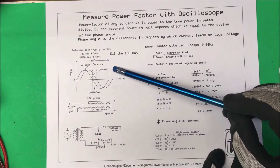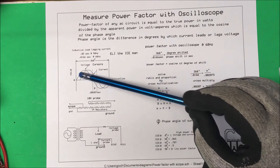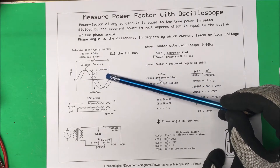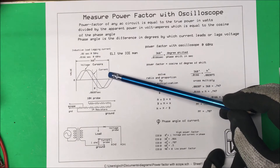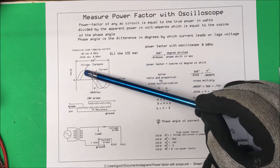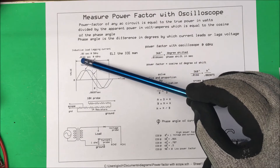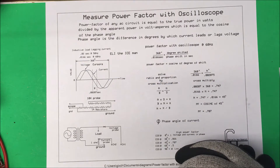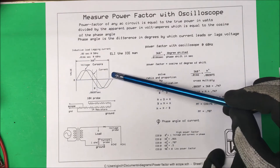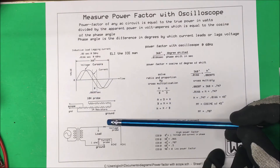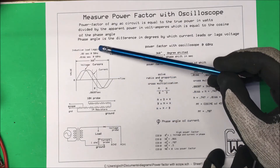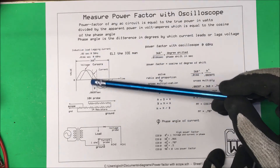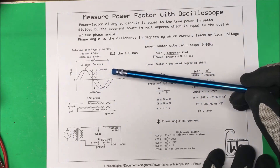In one cycle, that's 360 degrees. At 60 Hz it takes 0.0166 seconds to complete that cycle. This is your timeline here, and for 50 Hz it's going to be 0.02 seconds.